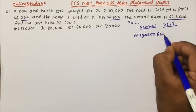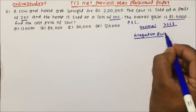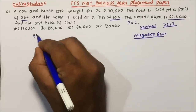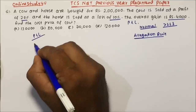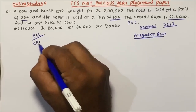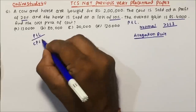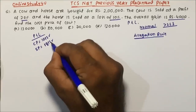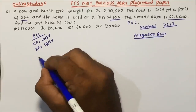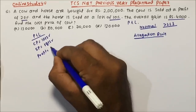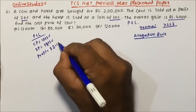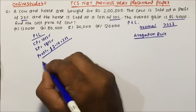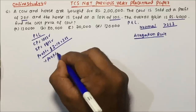When I solve it, it will take more than 2-3 minutes because I'm going to explain the concept of profit and loss and the allegation rule. The terms used in profit and loss: cost price is the price at which we buy a product. Suppose you buy a pen for 10 rupees — that becomes the cost price. If you sell the pen for 12 rupees, your selling price is 12 rupees. There is a profit of 12 minus 10, which equals 2 rupees.